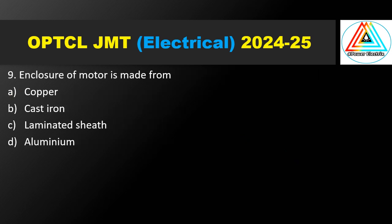Question number 9. The enclosure of a motor is made from — copper, cast iron, laminated steel, or aluminum. The enclosure of a motor is made from cast iron. The correct answer is cast iron, option B.